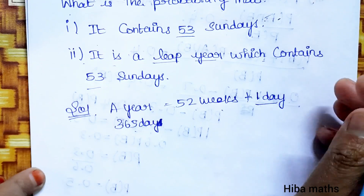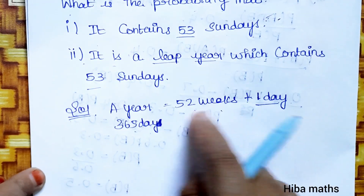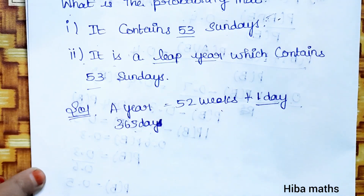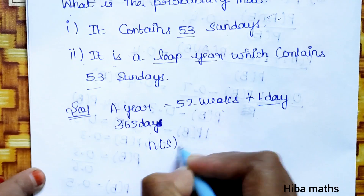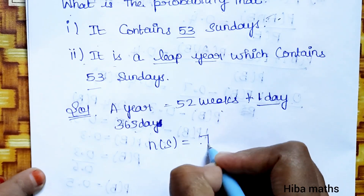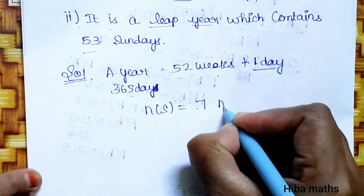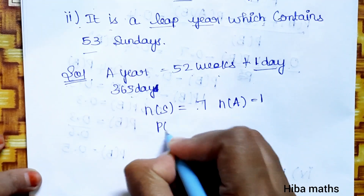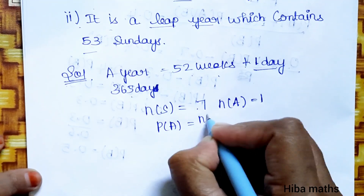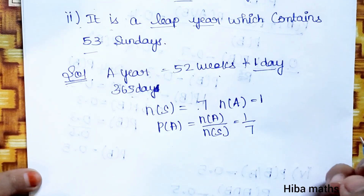Now, what is the question? So let's look at n of S — total is 7 days. And n of A, that is equal to 1. Now P of A is n of A by n of S, that is 1 by 7.